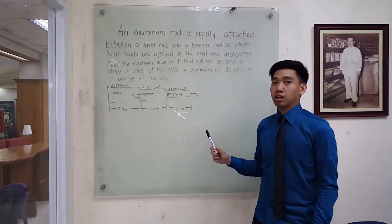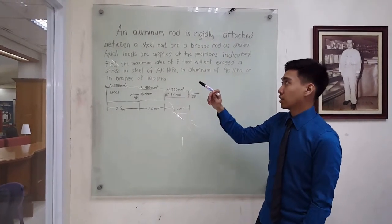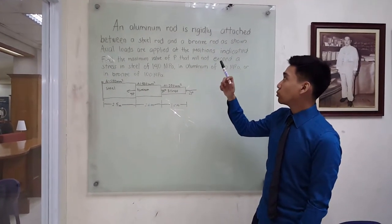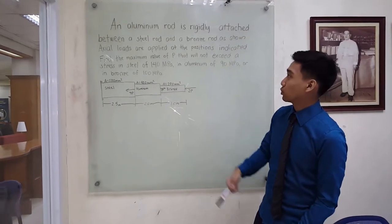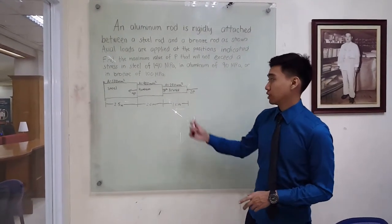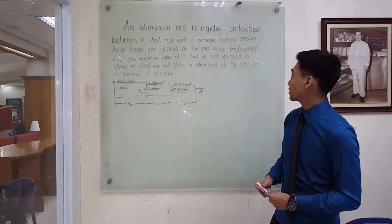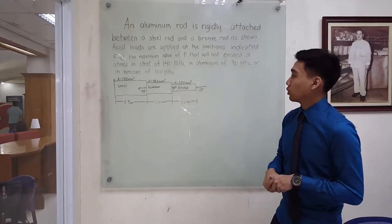It says here that an aluminum rod is rigidly attached between a steel rod and a bronze rod as shown here in this figure. Action loads are applied at the positions indicated.